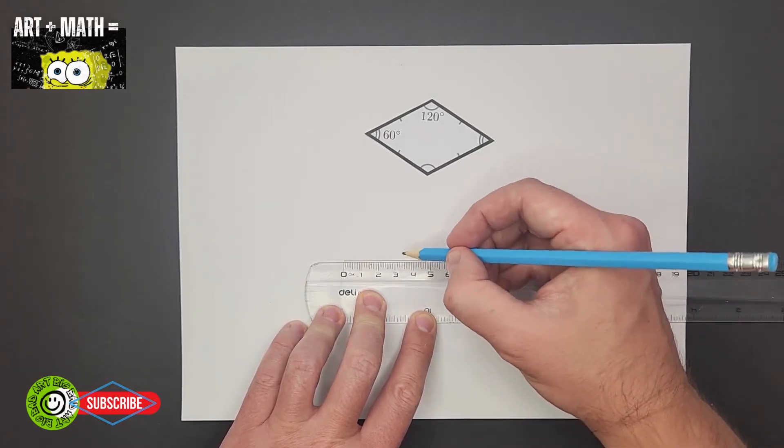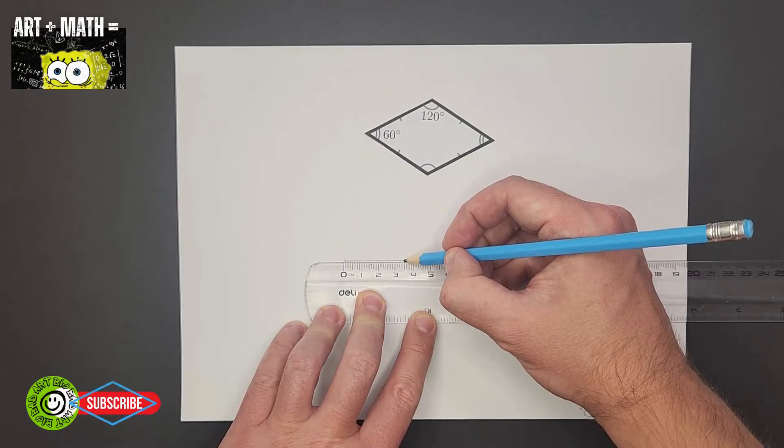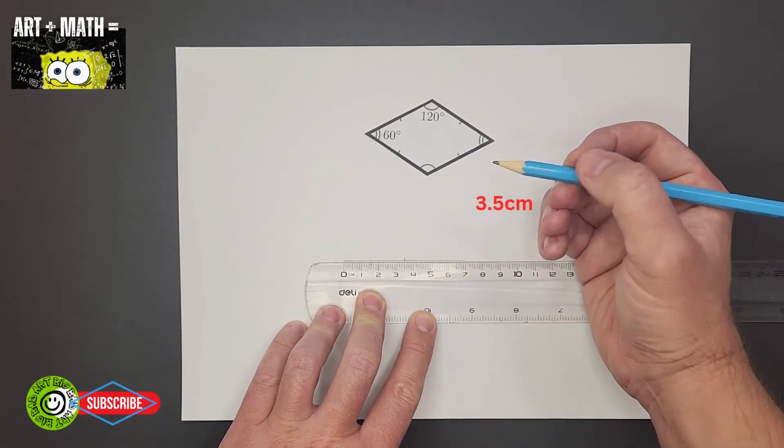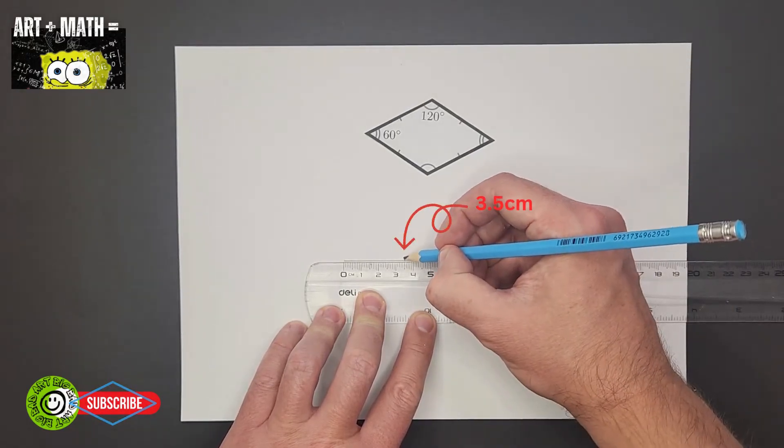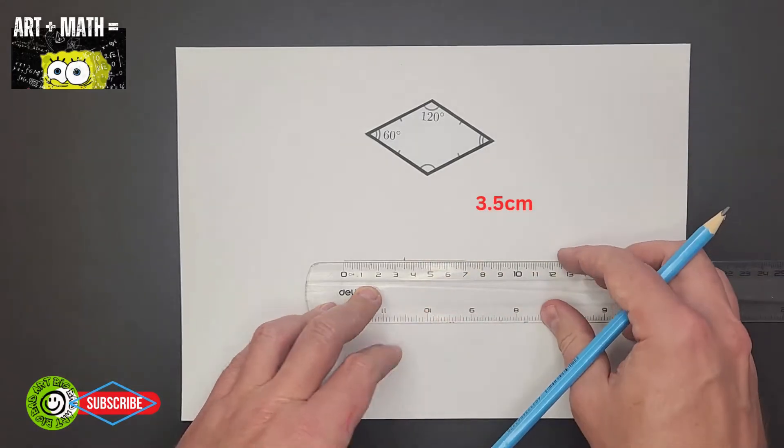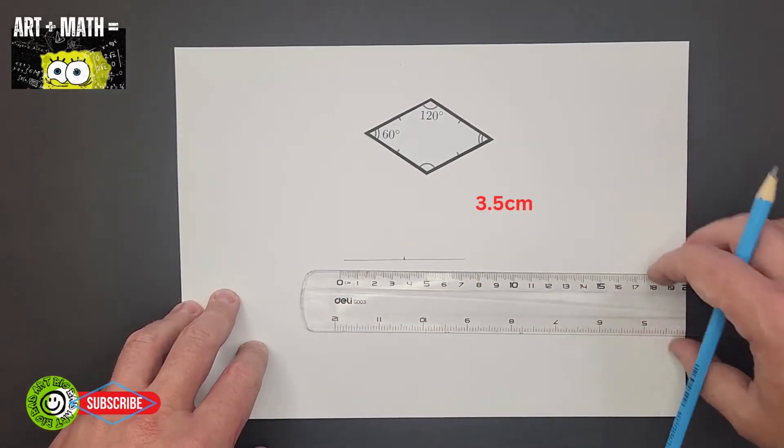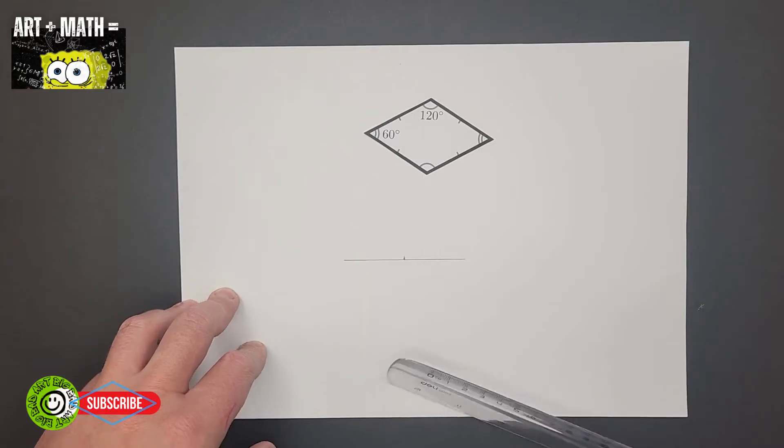And then you need to find the middle, which is three point five centimeters. Okay, so mark the middle, three point five.